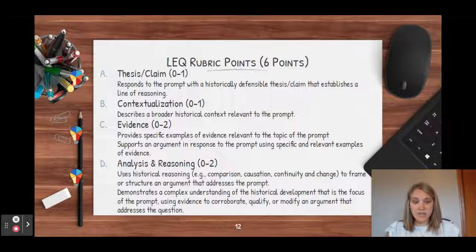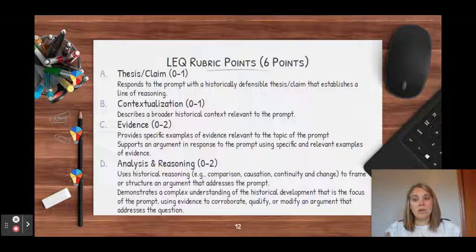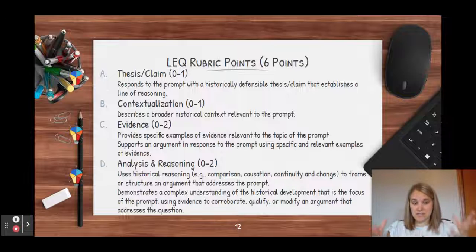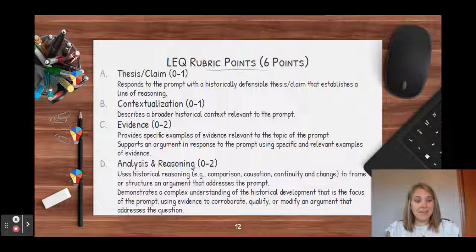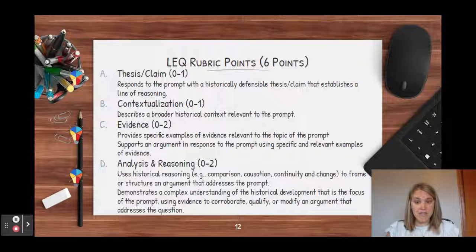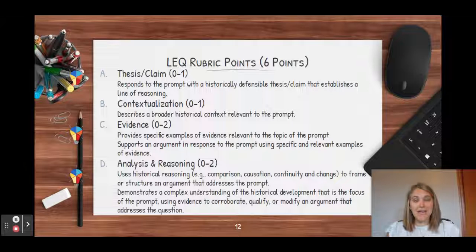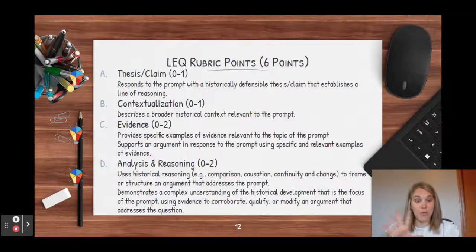Here's your rubric, and we are not going to be explaining all of these today. We are going to continue to go through them throughout the weeks here this summer. Your thesis and claim, that's worth one point. You're going to do something called contextualization, which is kind of setting the stage for your essay. That is typically done in the introduction. That's also a point. Evidence is probably the easiest way to earn points on the LEQ, and you have two opportunities, two points there. And analysis and reasoning, those are the two challenging points, and those are less frequently earned by students.